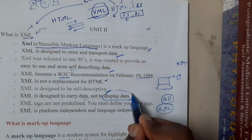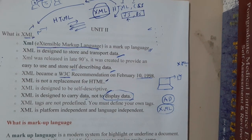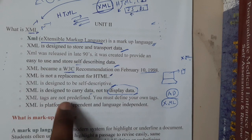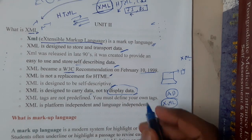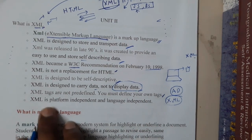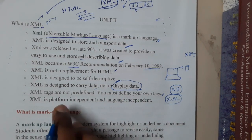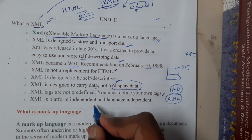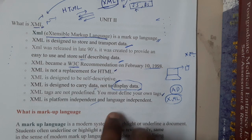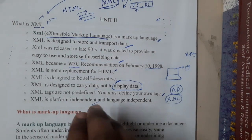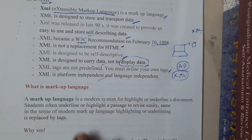XML is designed to carry data, not to display data. This is the reason why it is not a replacement of HTML, because HTML is used to represent and structurally display content. XML tags are not predefined — they are user-defined, so you can define your own tags. XML is platform independent and language independent; you can use any operating system and connect XML with any language.